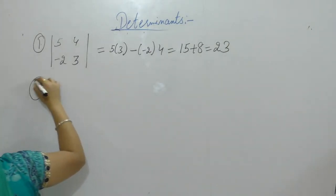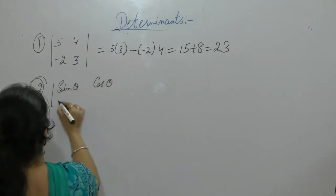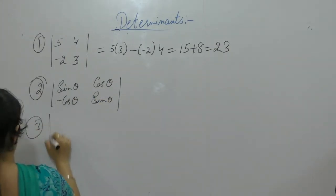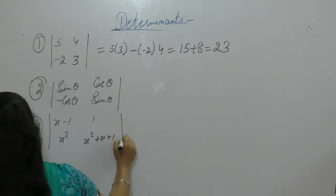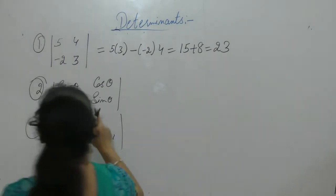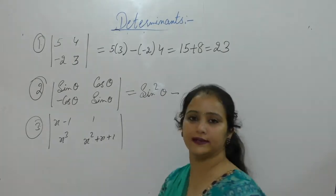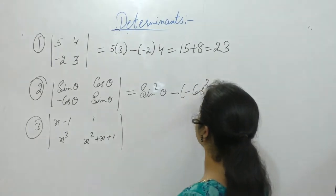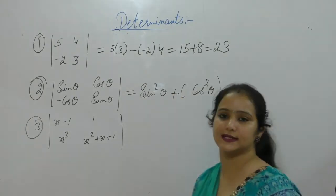Next: evaluate the determinant with sin θ, cos θ, -cos θ, sin θ. Solving: sin θ into sin θ is sin²θ. Negative sign in the middle, minus into plus is minus, so minus cos θ into cos θ is cos²θ. Minus minus plus, so sin²θ plus cos²θ, that is equal to 1.